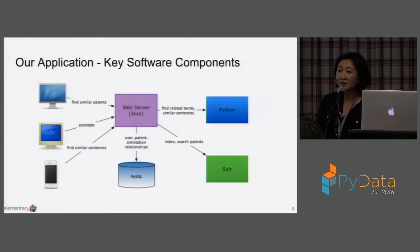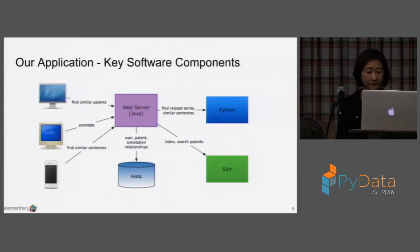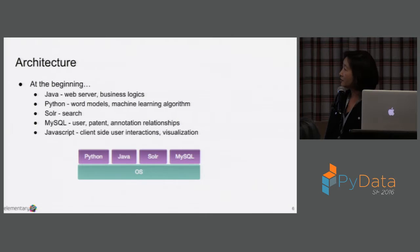Solr is a search engine that allows users to search on the patents they have saved. MySQL is for bookkeeping — the relationship between annotations, users, and patents. Architecture-wise, we started out pretty simple. We wanted to keep things simple. There are individual software components — Python, Java, Solr, and MySQL — all running independently on the host platform. We have developers on different platforms: some on Windows, some on Mac, some on Linux — a pretty diverse set of operating systems.